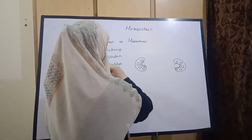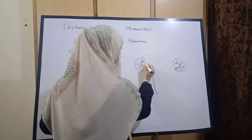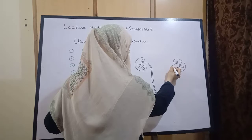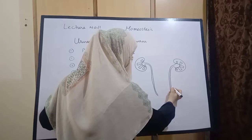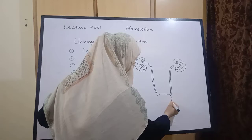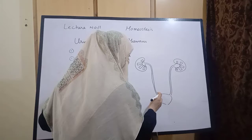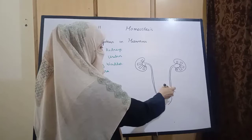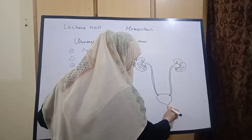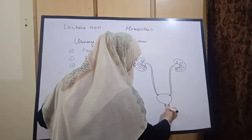Pelvis سے جو دو tubes نکلتی ہیں انہیں ہم ureters کہتے ہیں — a pair of tubes called ureters which arise from the pelvis, and they end at the urinary bladder. Urinary bladder میں جہاں پر یہ آکے کھلتی ہیں وہاں پر دو orifices ہوتے ہیں — دو سوراخ ہوتے ہیں۔ Urinary bladder سے اگلا حصہ ہے urethra, that is surrounded by sphincter muscles.